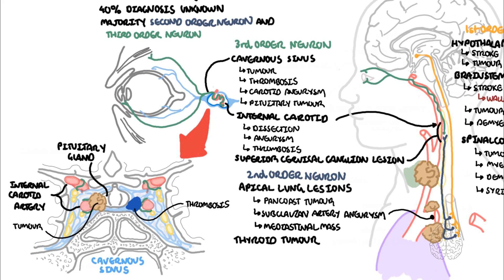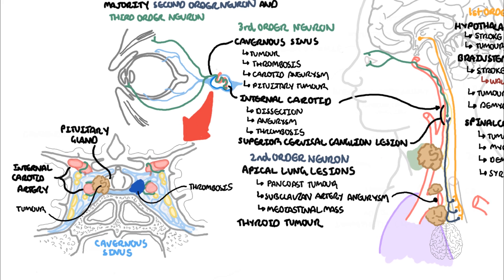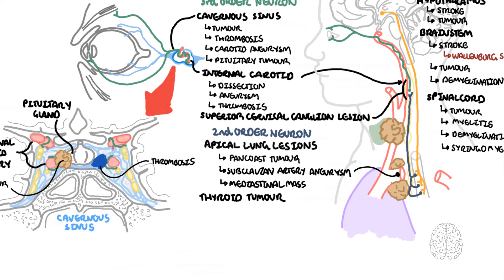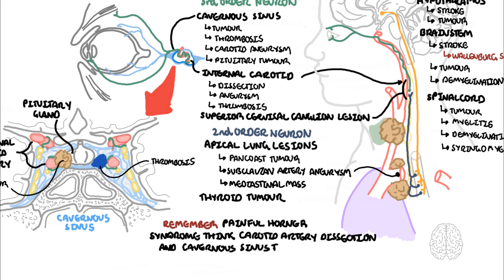So those are the main causes of Horner syndrome classified into the different lesions that can occur anywhere along the sympathetic pathway. Something to remember, painful Horner syndrome, you have to think about specific causes such as carotid artery dissection and cavernous sinus thrombosis. This typically occurs with a headache or neck pain in young adults.